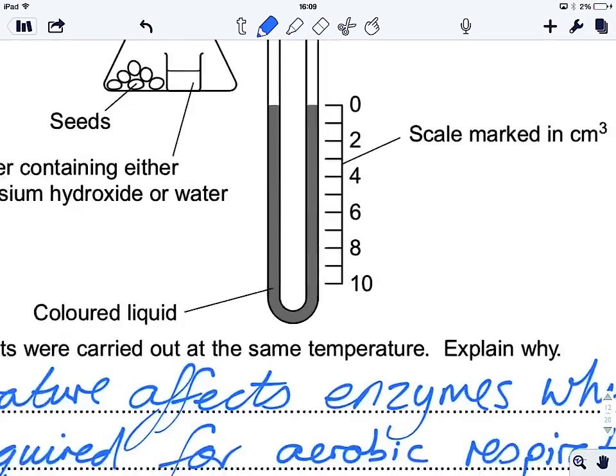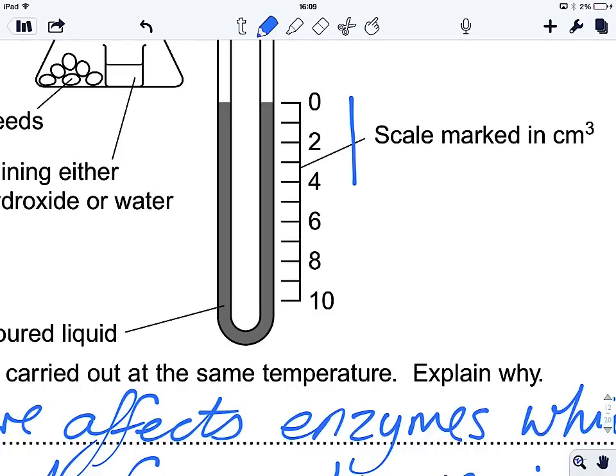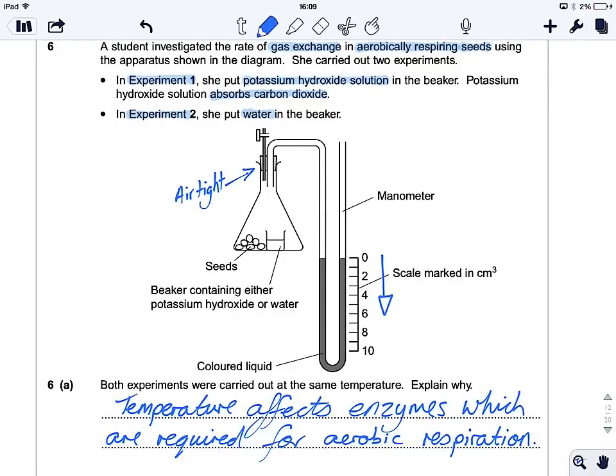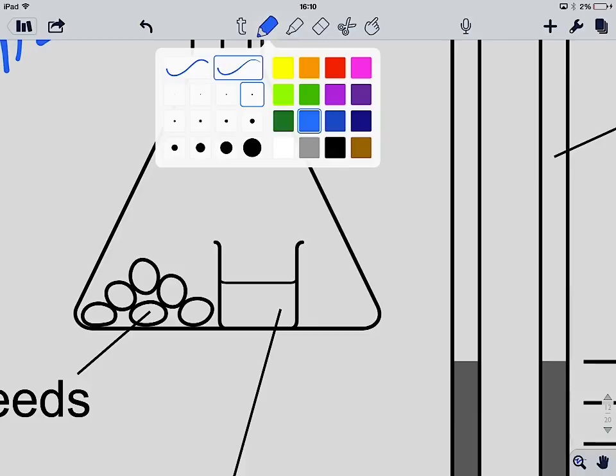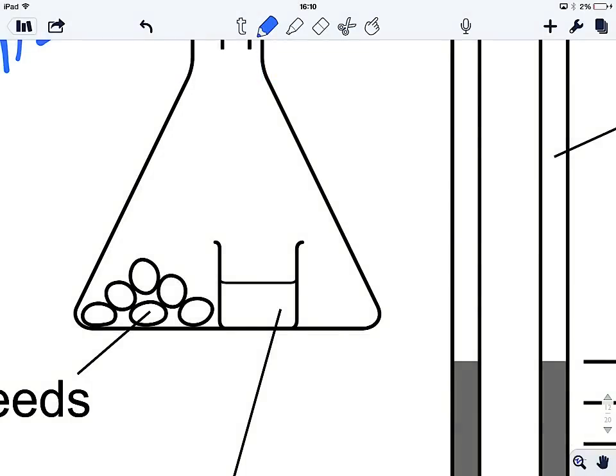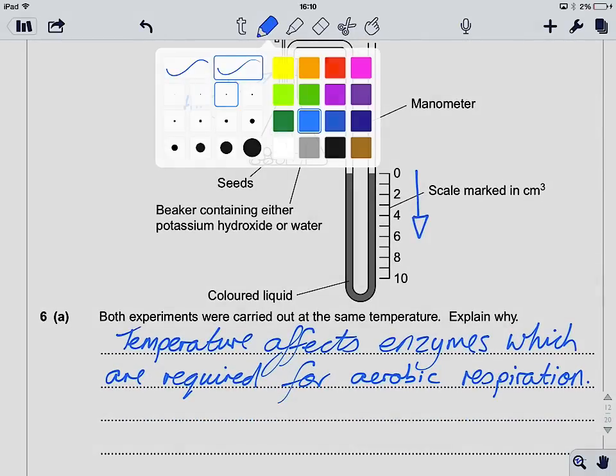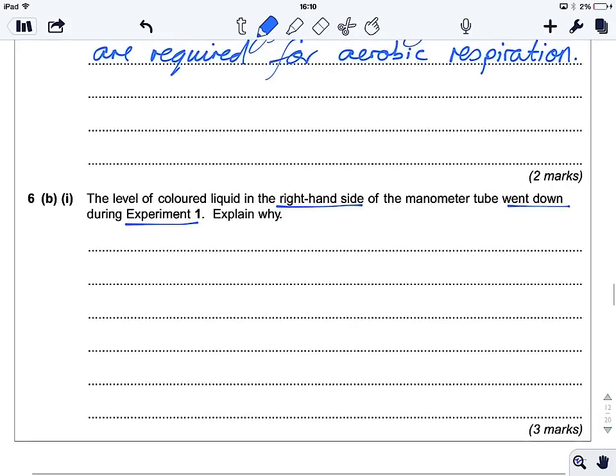So let's have a look back at the diagram. So there's the right-hand side, so this level went down. Okay, well, that kind of makes sense. The liquid's moving around, because it must have something to do with experiment one, which has potassium hydroxide in. So that's absorbing carbon dioxide. So CO2 is being produced by these guys as they respire, and then it's being absorbed by the potassium hydroxide. Okay, well, let's try and fashion an answer together.